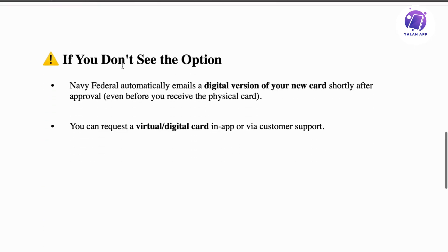If you are not able to see this option, Navy Federal automatically emails a digital version of your new card shortly after approval. So even before you receive the physical card, you can access it through your email. Check your email if you've received anything from them. You can also request a virtual digital card in-app or via customer support — they can help you with this as well.